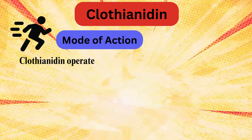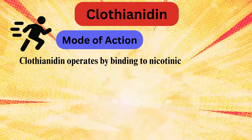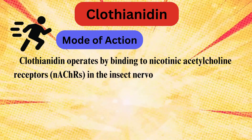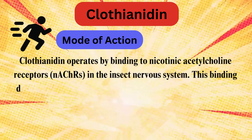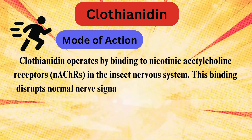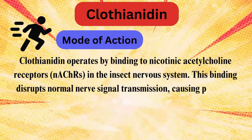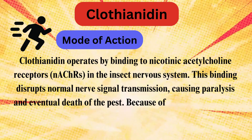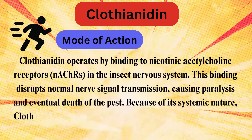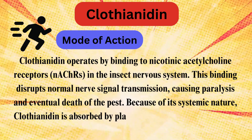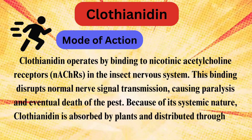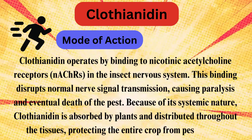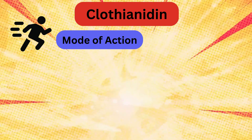Clothianidin operates by binding to nicotinic acetylcholine receptors (nAChRs) in the insect nervous system. This binding disrupts normal nerve signal transmission, causing paralysis and eventual death of the pest. Because of its systemic nature, Clothianidin is absorbed by plants and distributed throughout the tissues, protecting the entire crop from pest attack.